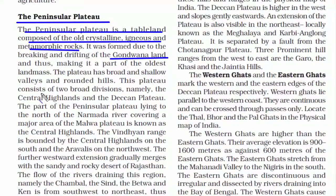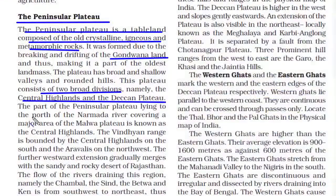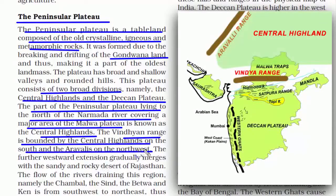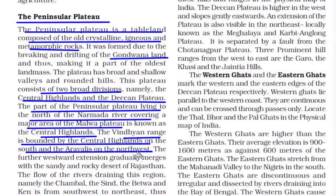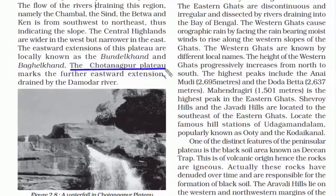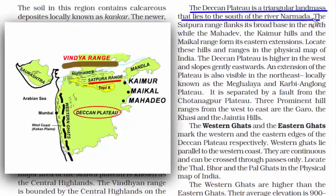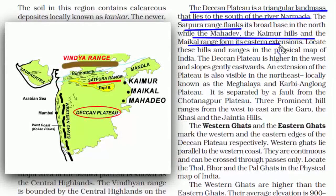The Central Highlands lie to the north of the Narmada river, covering the major area of the Malwa Plateau. It is bounded in the south by the Vindhya range, and towards its northwest near Rajasthan it is bounded by the Aravalis. Rivers found here include the Chambal, Sindh, Betwa, and Ken. The Central Highlands extend up to the Chota Nagpur Plateau in the east. The second division, the Deccan Plateau, lies to the south of the Narmada river, with the Satpura range as its north boundary, and the Mahadeo, Kaimur Hills, and Maikal range as the eastern boundary.